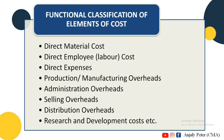The first section is Direct Material Cost — that is the finished production part of the production process. Direct employee or labor cost is the production process, covering directly involved employees' wages and factory workers' wages. Direct material and direct employee cost together with direct expense form the primary cost elements.